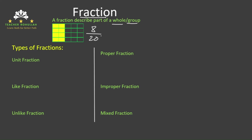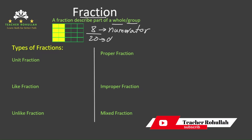And in this fraction, the number above the bar — which is called a fraction bar — is called the numerator. And the number below the bar is called the denominator.